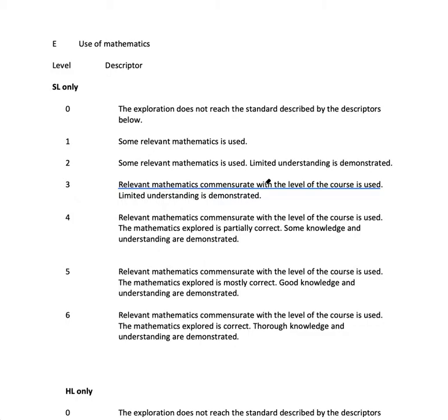If you do a wonderful, amazing IA investigation where you use just SOHCAHTOA and Pythagoras' theorem, and you're doing something on triangles, you cannot get more than 2 for this criterion because you're only using prior learning. So you have to use maths that is commensurate with the level of the course, which means at the same level, basically in the course.